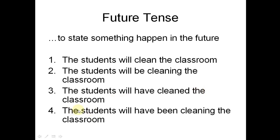Number four, future perfect continuous: 'The students will have been cleaning the classroom.' The difference from number three is that in number three the teacher is certain the classroom will already be clean when she arrives, but in number four the teacher is certain the cleaning has already started and is still ongoing — not yet finished. When the teacher enters, she might see the students still holding brooms, meaning the activity started some hours earlier and is still in progress. That is the function of tenses in English sentences.